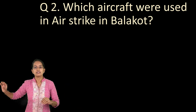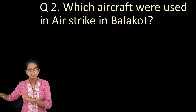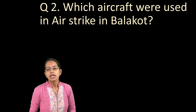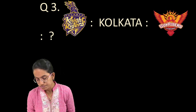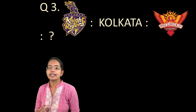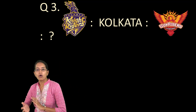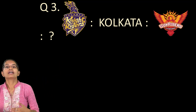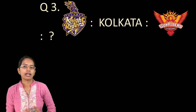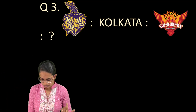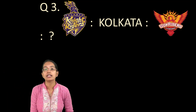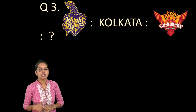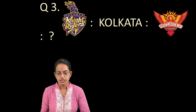The second question, somewhat related, was based on Mission Shakti in another paper. The next question was about IPL team symbols — Knight Riders is the symbol for the Kolkata team, and Sunrisers is the symbol for the Hyderabad team. These kinds of questions are based on visual knowledge, so if you've been going through newspapers regularly, they should not be difficult.